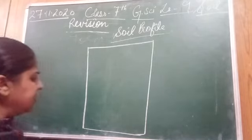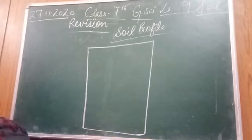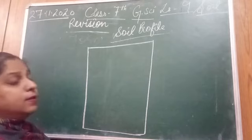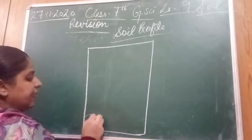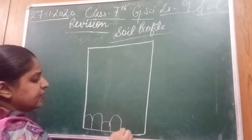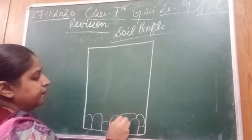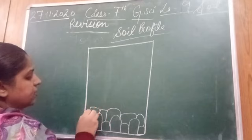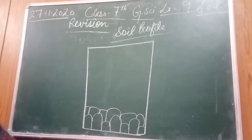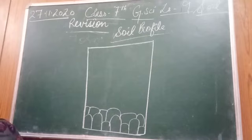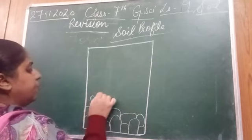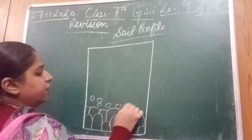Soil profile is the vertical section through which different layers of soil are seen. At the bottom there is a layer of big rocks — that is the bedrock. Above the bedrock there is the C horizon, which contains small lumps and broken pieces of rocks.